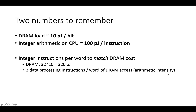To keep these as rough ballpark numbers: there's a huge range of CPUs and process technologies, and a variety of DRAM technologies. But DRAM loads are currently going to be on the order of 10 picojoules per bit — could be less, could be more. And integer arithmetic on the CPU, 100 picojoules per instruction for a CPU that's not super power hungry, is a reasonable guess.